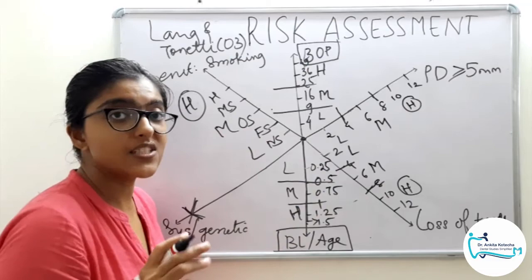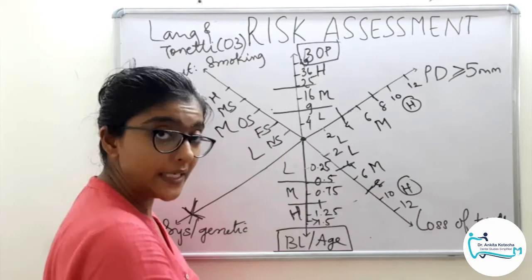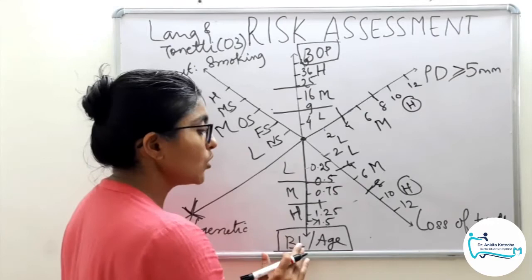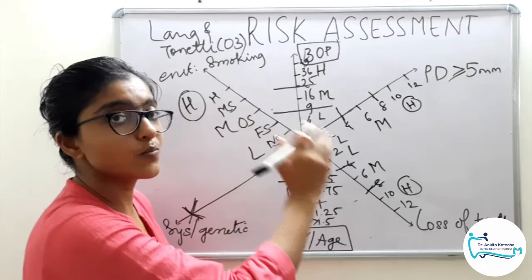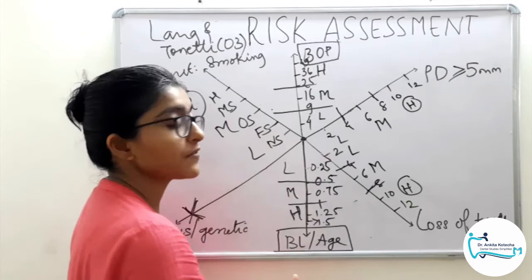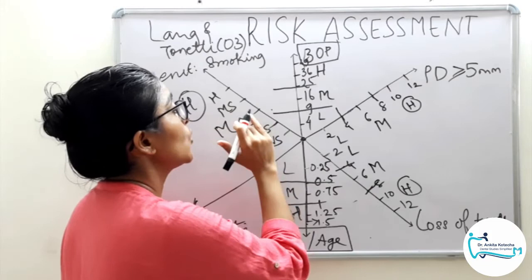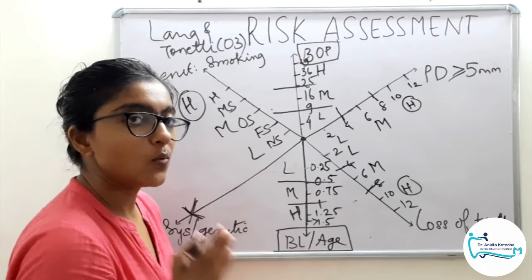This completes the functional diagram — the Lang and Tonetti risk assessment model. A quick summary of the six factors: bleeding on probing; probing depth (residual probing depth ≥5 mm); loss of teeth from 28 teeth (third molars excluded, replacements not counted); bone loss by age factor; systemic or genetic factors; and environmental factors such as smoking. The scale for bleeding on probing is quadratic; probing depth and loss of teeth are linear; bone loss by age is in multiples of 0.25; systemic or genetic factors are recorded as present or absent; and smoking is recorded across five categories.